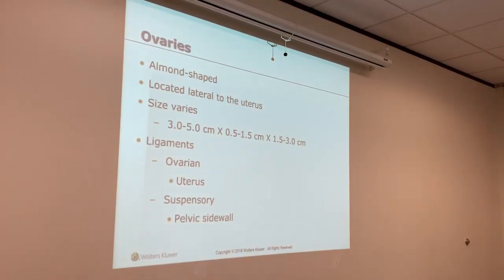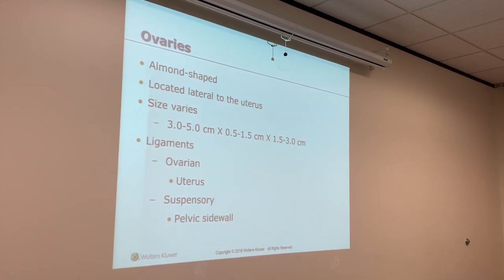Ovaries are almond-shaped. If they're round, then we have a disease process that we usually call polycystic ovarian syndrome — we're going to learn about that this semester. But most of the time they're going to be almond-shaped. They are in the adnexa, or lateral to the uterus, and they vary in size: 3 to 5 centimeters by 0.5 to 1.5 centimeters by 1.5 to 3 centimeters.